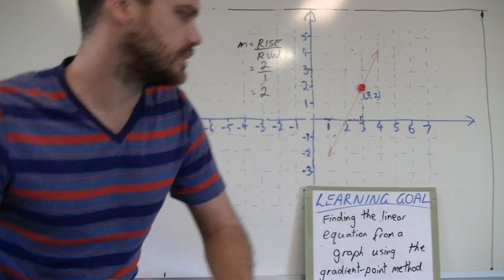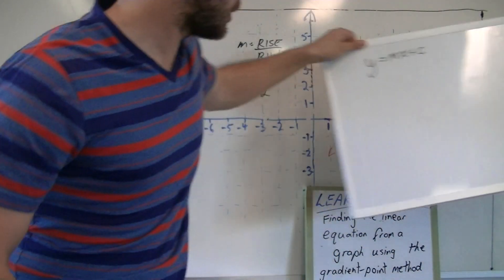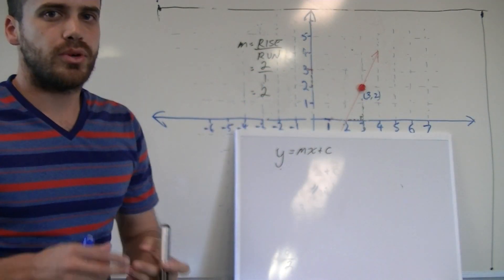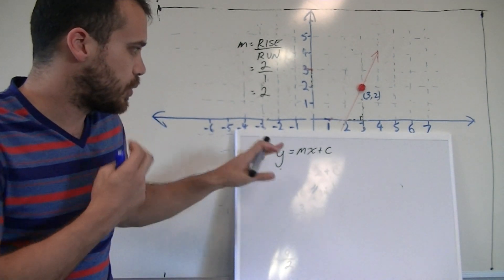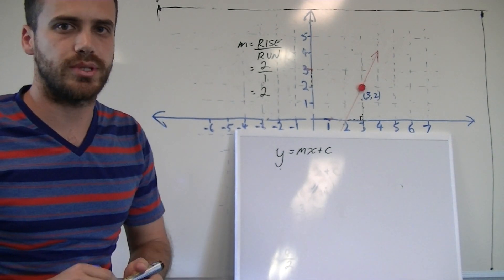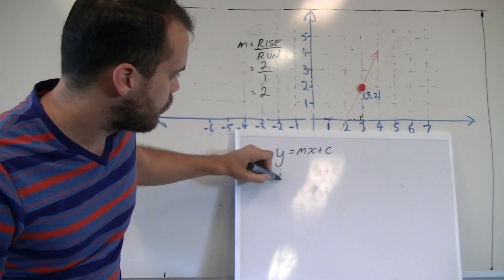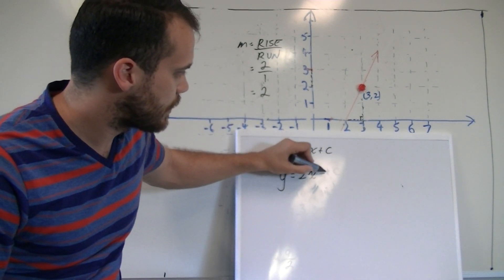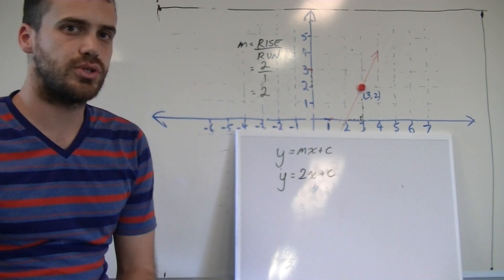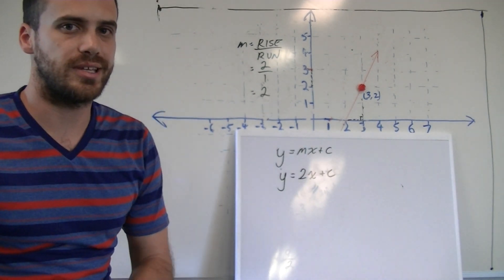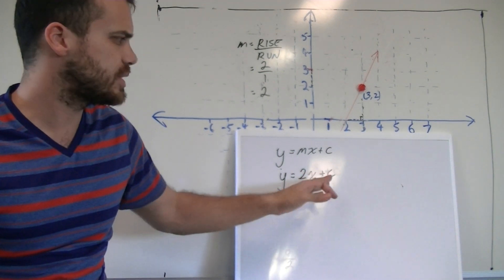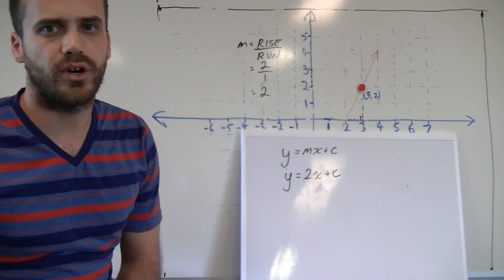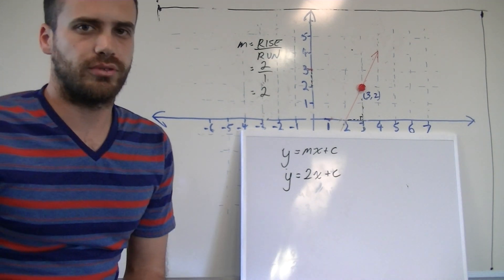Now this next part's a little complicated, so we'll grab another board here. Now remember that we're going to take these things and put it into our equation y equals mx plus c. We're half of the way there, we know that m is 2. So y equals 2x plus c. Now we don't know our c value, we don't know our y-intercept, but if we knew it, if we could find it, we would know what our general equation is.